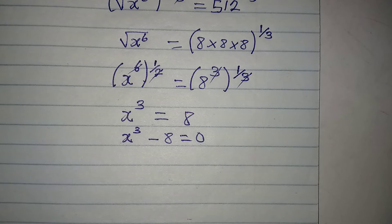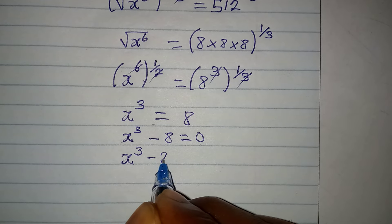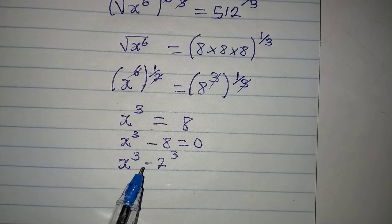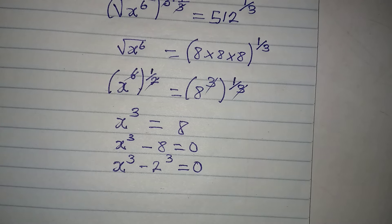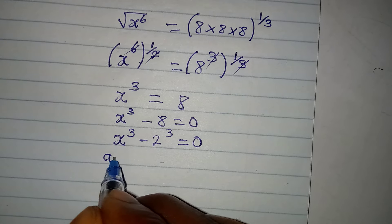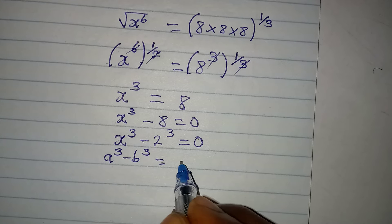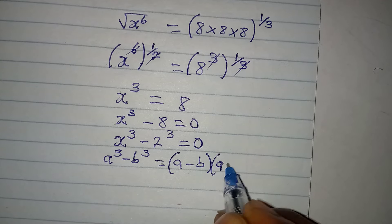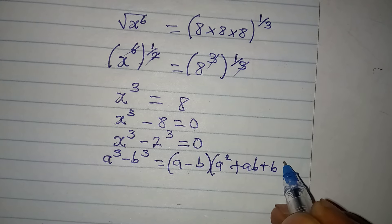Do you know this is the same as x to the power of 3 minus 2 to the power of 3? Because 2 cubed gives us 8. The idea is to get everything with the same power equal to 0. Now let's use the standard identity: if you have a cubed minus b cubed, this gives us (a minus b) times (a squared plus ab plus b squared).